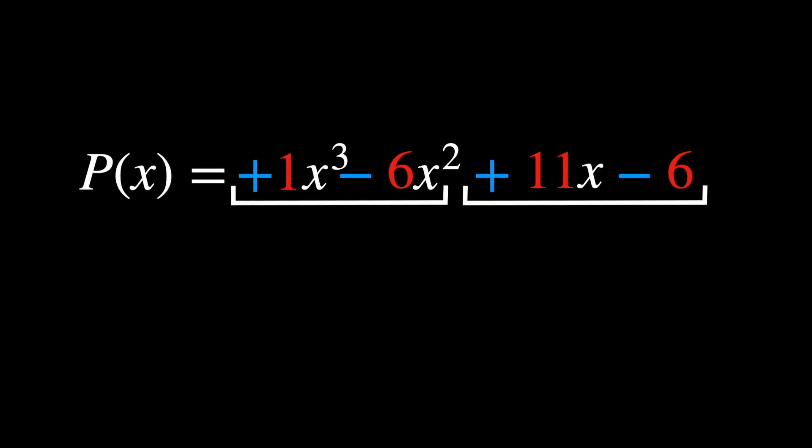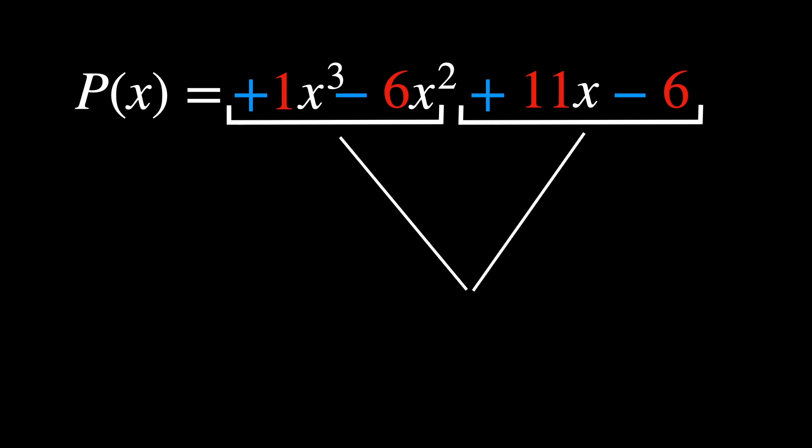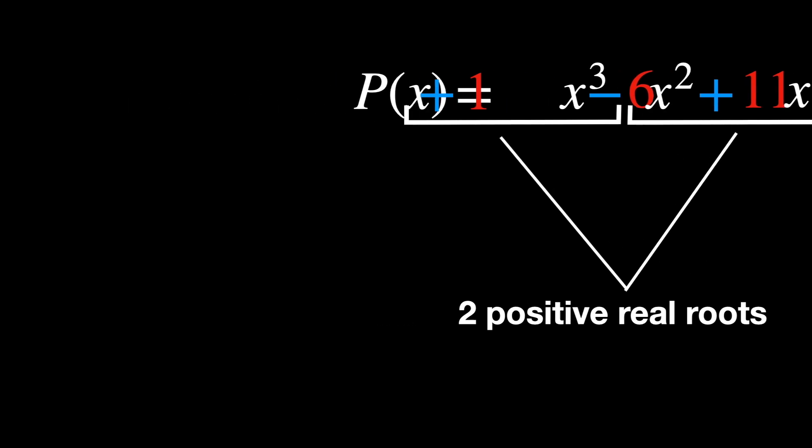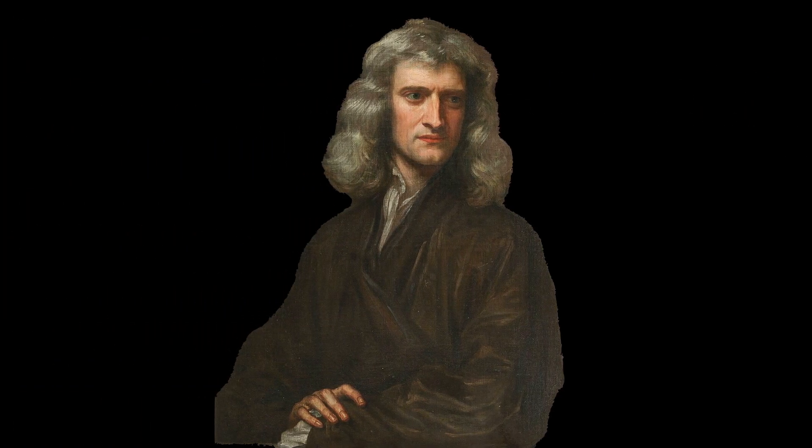Hence, there are two sign changes in P of x, which according to Descartes' rule of signs indicates that there can be up to two positive real roots. And by the way, Isaac Newton also brought his own approach to find roots, known as Newton-Raphson method.